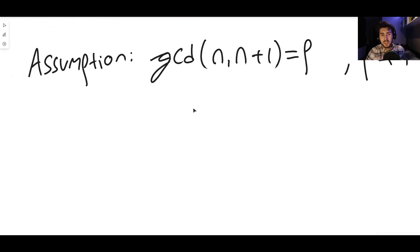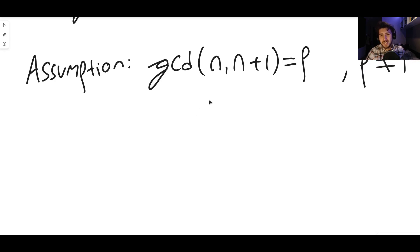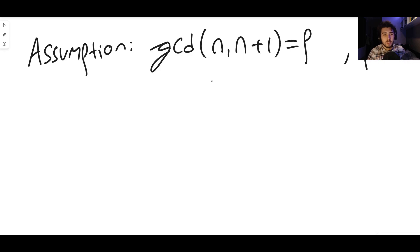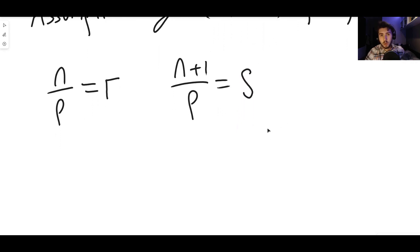So if the greatest common divisor of n and n+1 is p, what that means is that when you do n divided by p, you get a whole number. That's what it means. You can divide n by p and get a whole number out. I'm going to call that whole number r. But also n+1 divided by p is a whole number as well, and I'm going to call that number s. So r and s must be whole numbers because we're assuming that p does divide n and n+1. So r and s are integers as well.